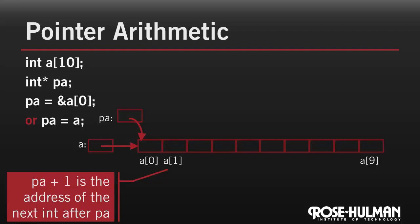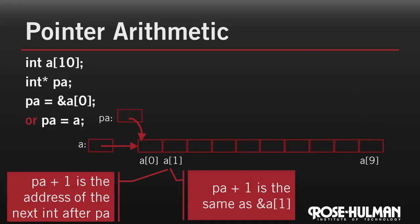Now using pointer arithmetic, pa plus 9 is the address of that last element way down in the array. Another way of writing this is that pa plus 1 is the same as the address of a sub 1. Or in general, pa plus i is the same as the address of a sub i for any index i.